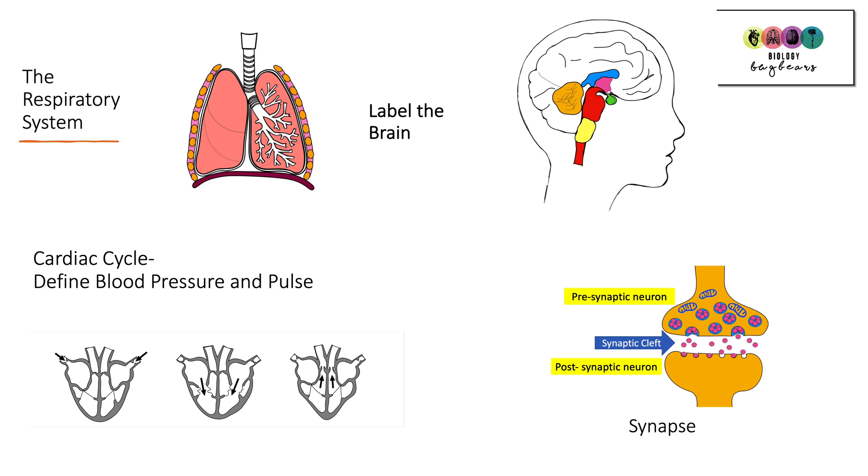Can you label the brain and tell me what each part of the brain does? Can you define blood pressure and pulse and give an account of the cardiac cycle? And can you draw a picture of the synapse? So these are just things that I'm remembering at the moment and I think that they're tricky and I would revise if I was you.